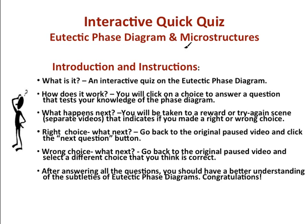It's a little bit different than the other screencasts that have been done in the past. So, what is it? It is an interactive quiz on the eutectic phase diagram. How does it work? You will click on a choice to answer a question that tests your knowledge of the phase diagram. What happens next? You'll be taken to a reward or try again scene, which are separate videos that indicate if you made a right or wrong choice. If you made the right choice, you go back to the original paused video — this video you're watching right now — and click on the next question button.